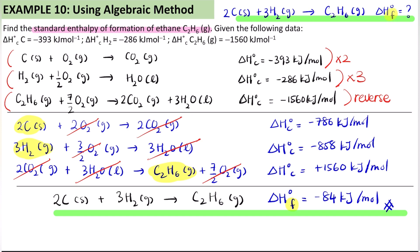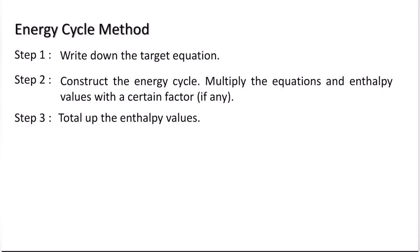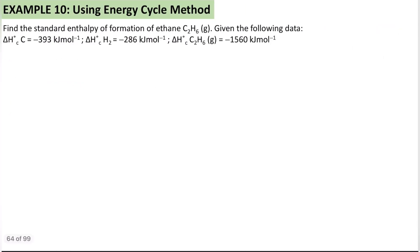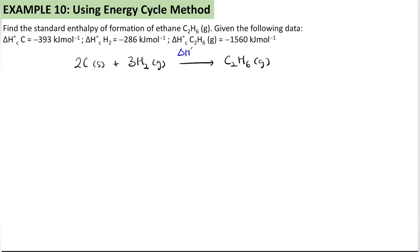This is Hess's Law using the algebraic method. Now we have the energy cycle method, which has only 3 steps: write the target equation, construct the energy cycle, then simplify and total up the enthalpy values. Let's try using the same example. The target equation is 2C(s) + 3H₂(g) → C₂H₆(g), and we want to find ΔH°f.